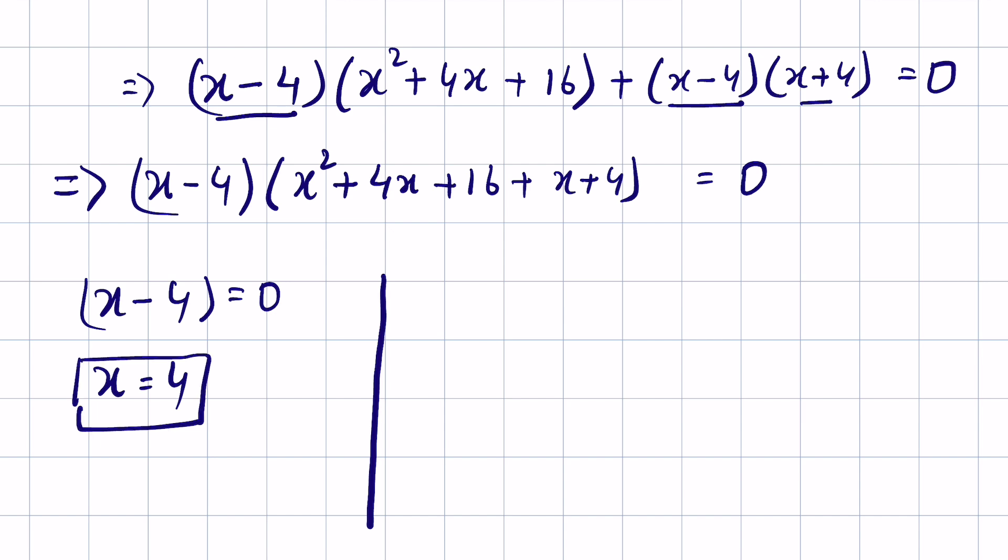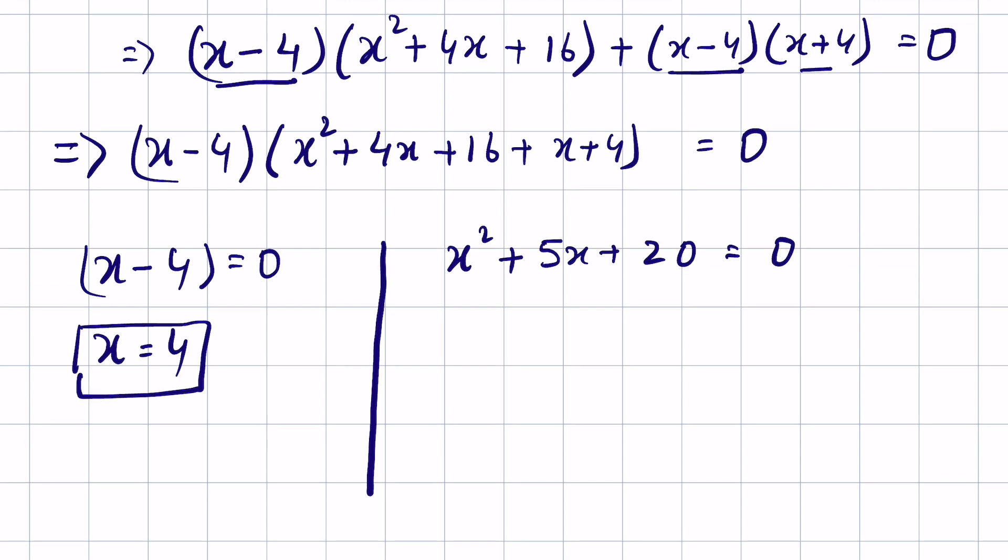And when x² + 5x + 20 = 0. Let's check if we have a real solution. We check if b² - 4ac is greater than or equal to zero using the discriminant method.